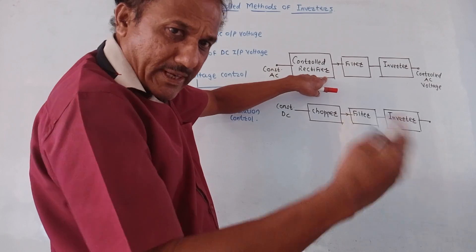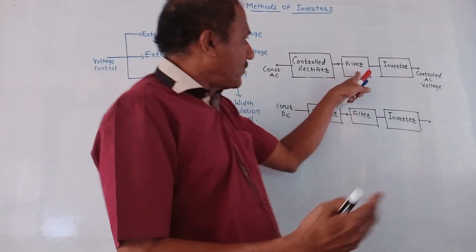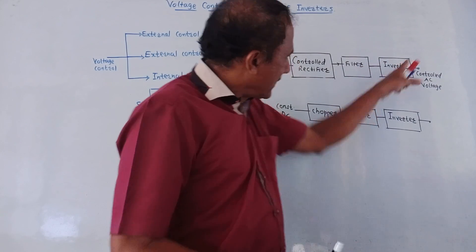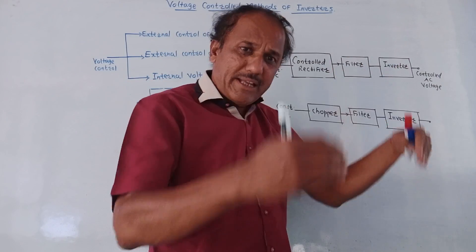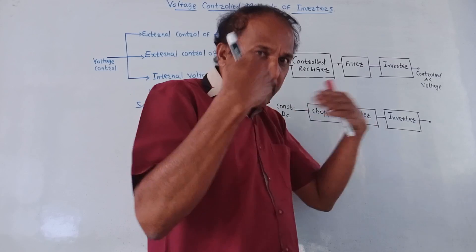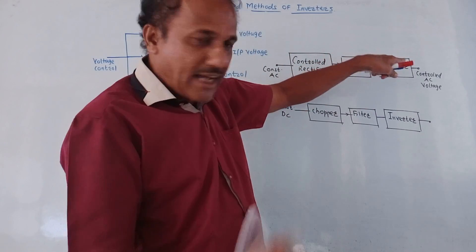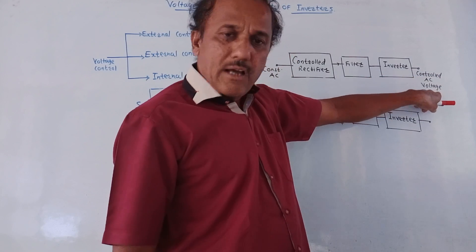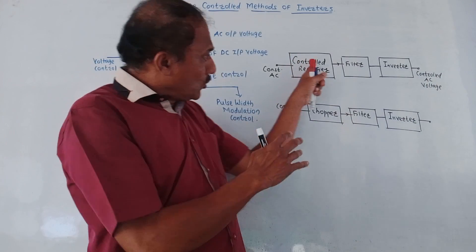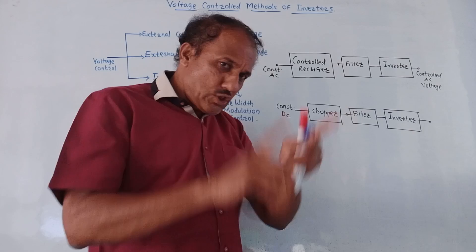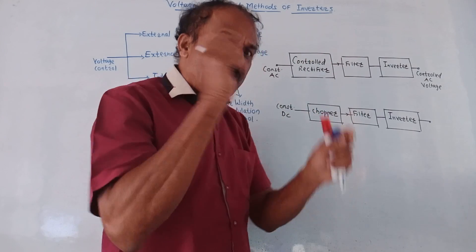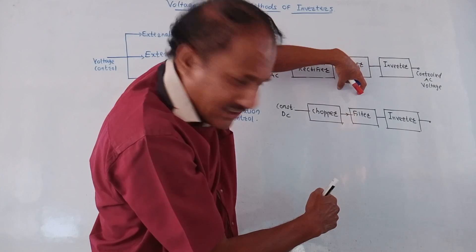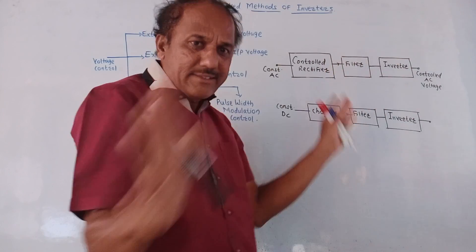The output of this controlled rectifier, which is a variable DC output, is applied to a filter to remove ripple, and then this is applied at the input of the inverter. So at the input of the inverter we are getting variable DC, which we can adjust as per the requirement, and at the output of the inverter we are getting controlled AC output voltage. If you don't want to use a controlled rectifier, another option is to use an uncontrolled rectifier with a chopper in series, then a filter, and then the inverter.